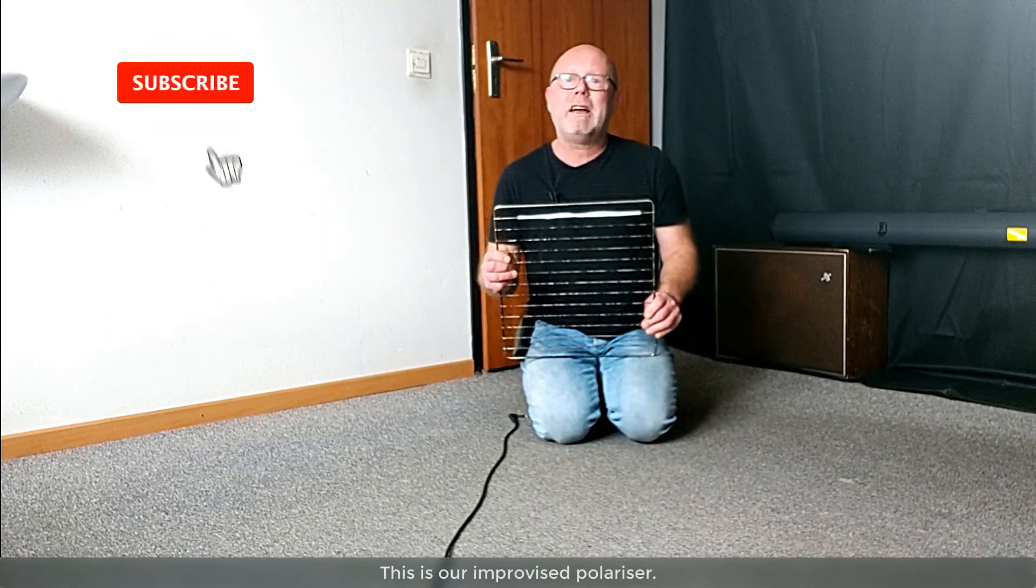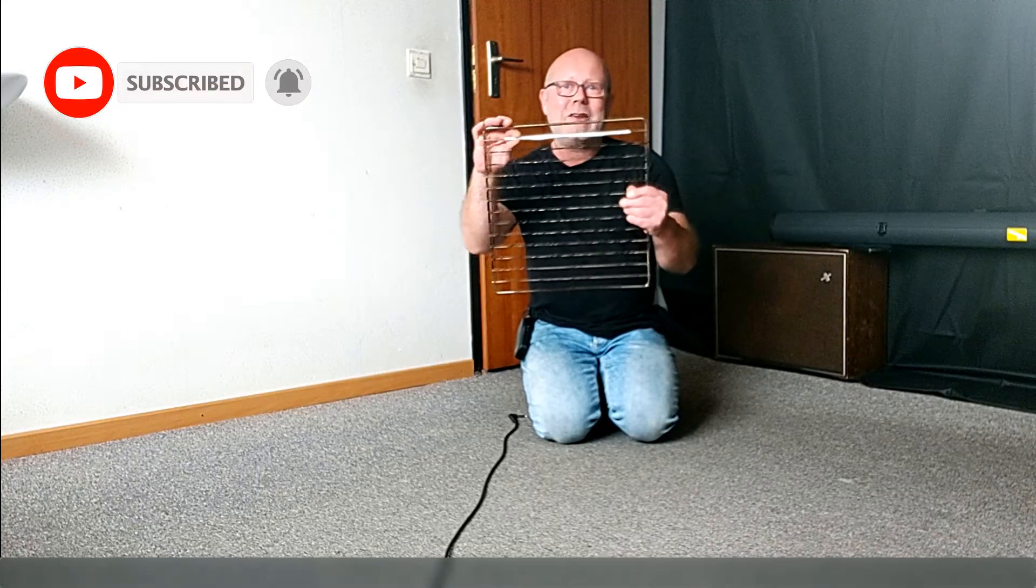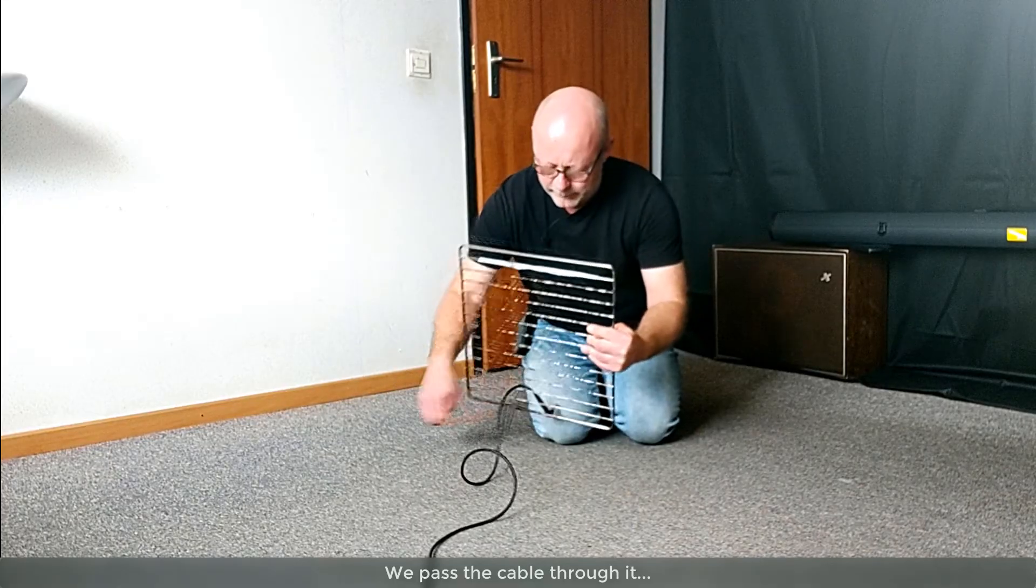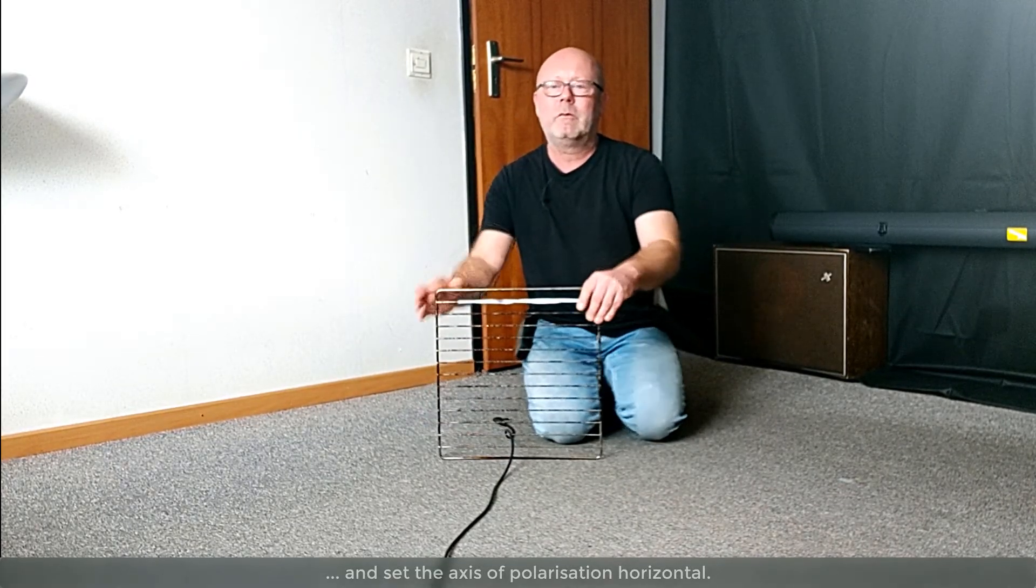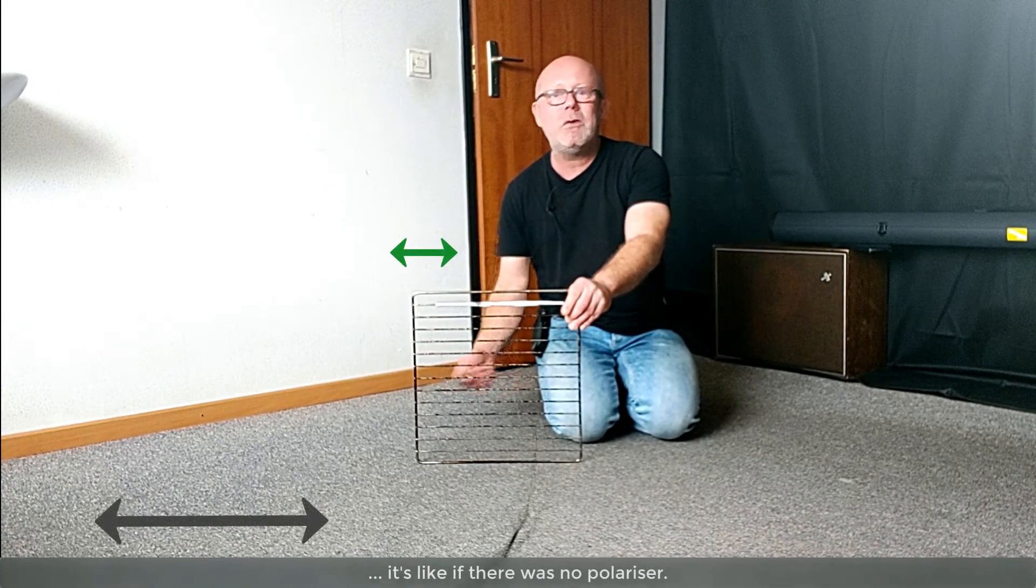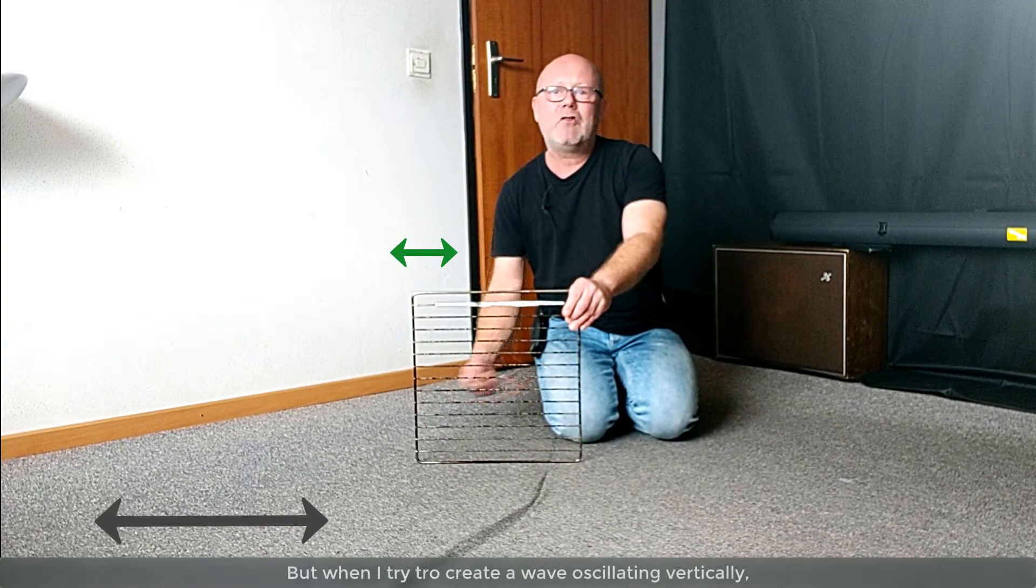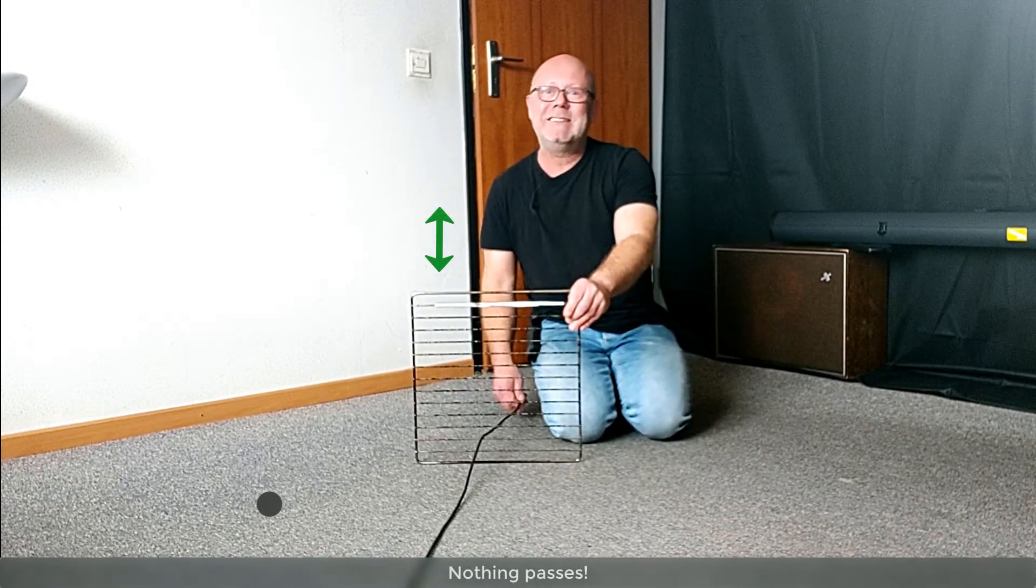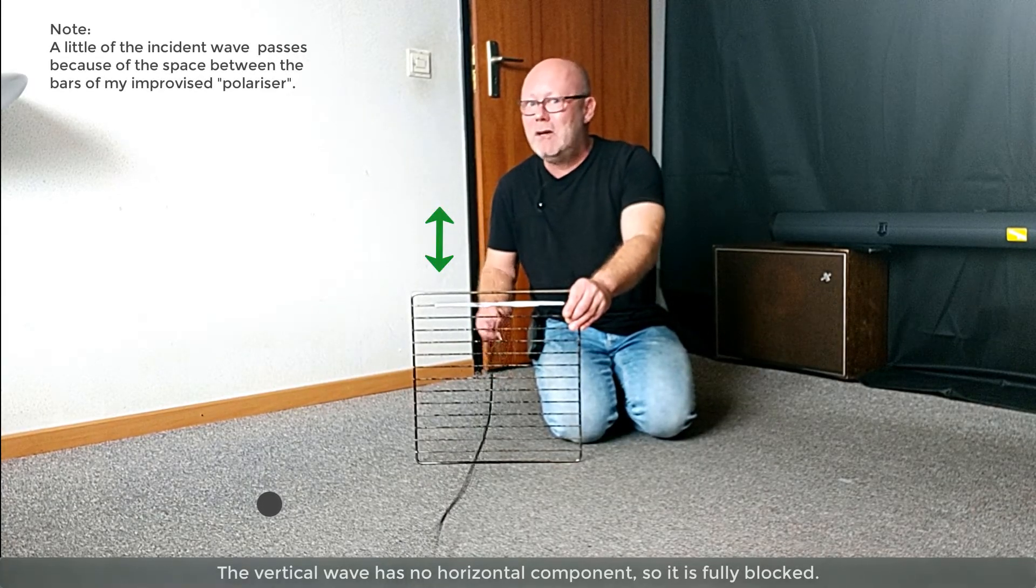This is our improvised polarizer. I taped some white paper on one of the bars of the rack so that you can see the axis of polarization. I will pass the cable through it and set the axis of polarization horizontal. When I produce a horizontal wave, it's like if there was no polarizer. The wave passes fully. But when I try to create a wave oscillating vertically, nothing passes. Yes, the vertical wave has no horizontal component, so it is fully blocked.